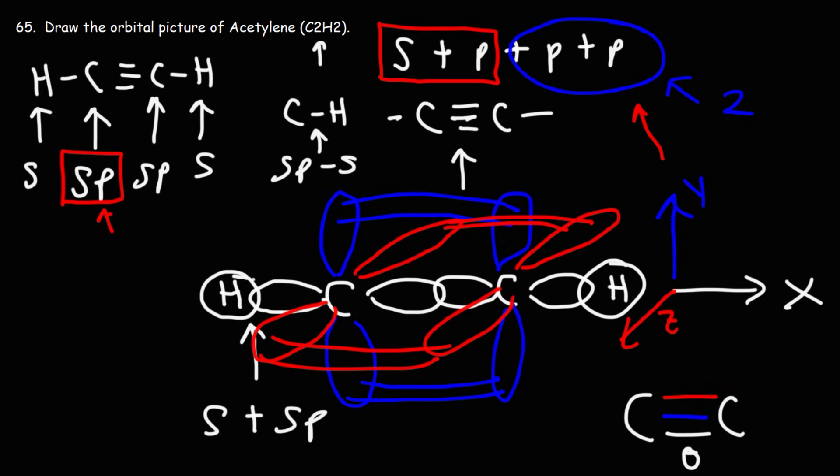Just to recap: here we have an overlap of an s and a hybrid sp-orbital. The same is true here. Here we have an overlap of two sp-hybrid orbitals. All of these are sigma bonds.